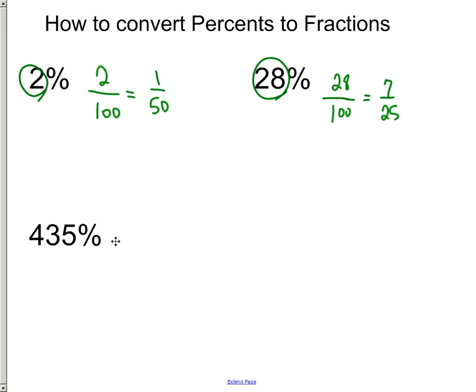And for this one, there's a couple of different ways you could do it, but I mean, it still works, so why not keep it the same method that you used? Put 435 over 100.